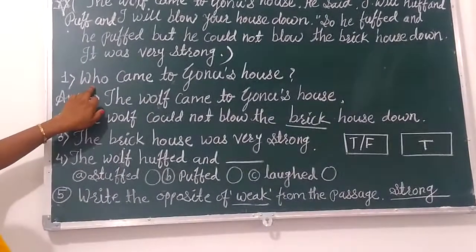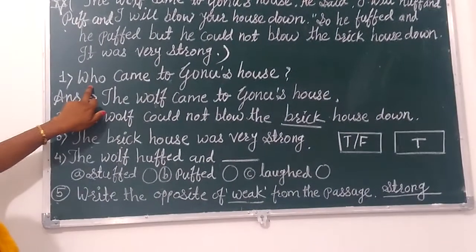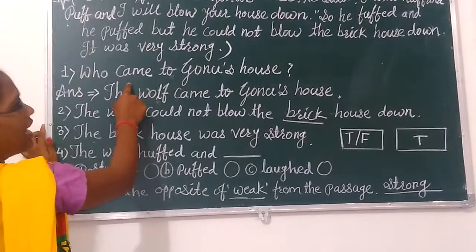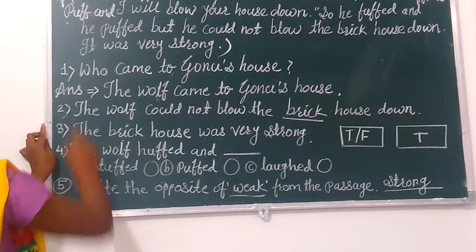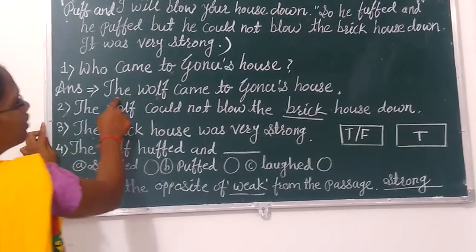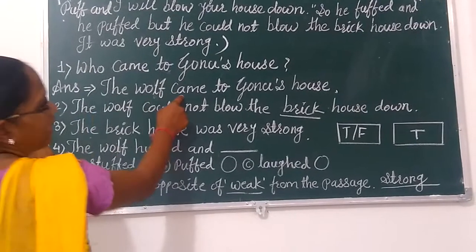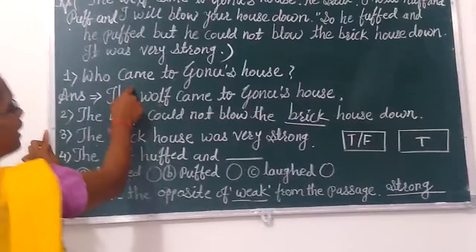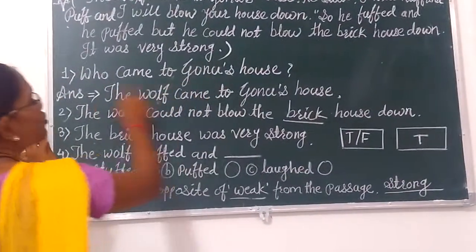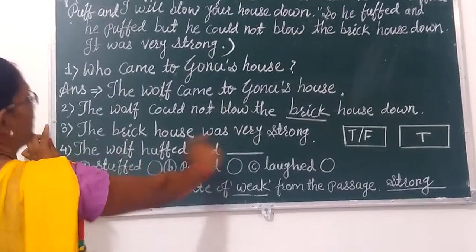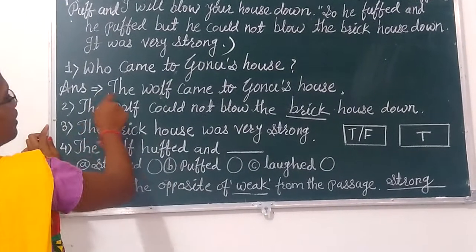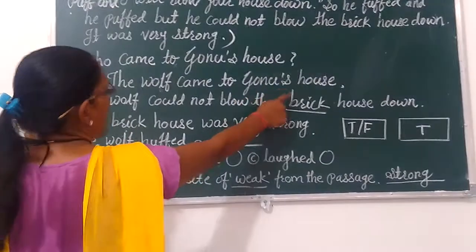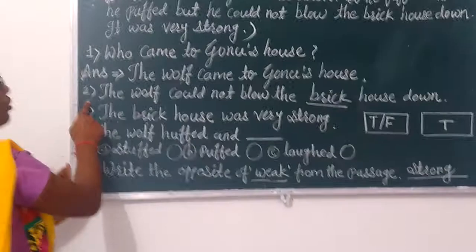Number one question — everyone look here. Who came to Bono's house? Bono's house mein kaun aaya tha? Answer: The wolf came to Bono's house.